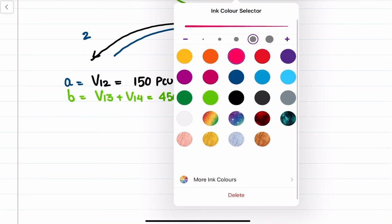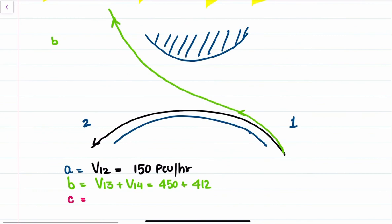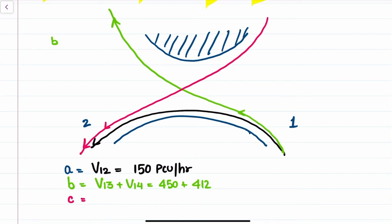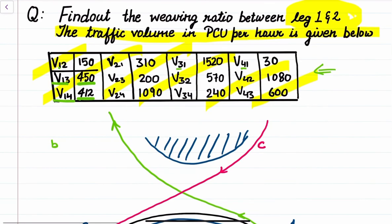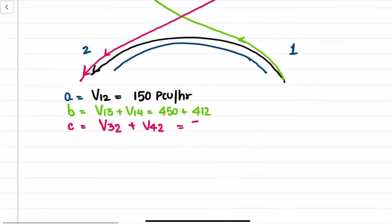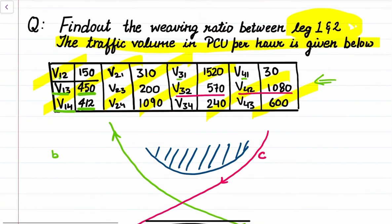Parameter C is the traffic coming from some other leg and going to leg number 2 — that is all incoming traffic to leg 2 except from leg 1. The other legs are leg 3 and leg 4, so C = V32 + V42 = 570 + 1080 = 1650 PCU per hour.